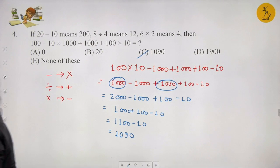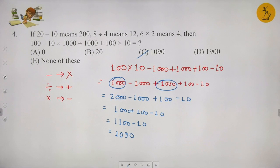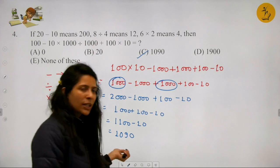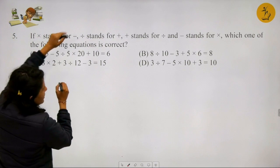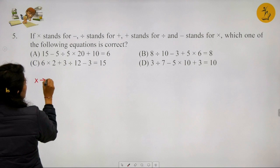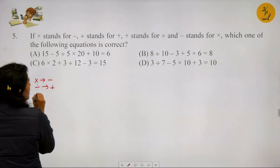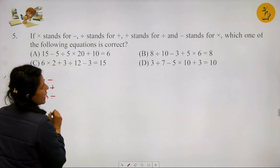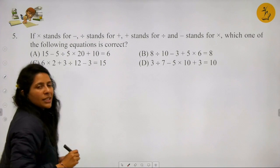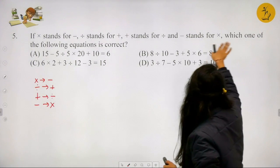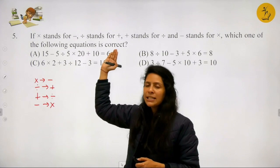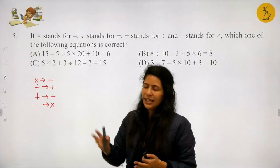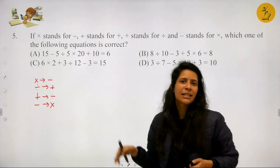Question 5: If multiply means subtraction, division means addition, addition means division, and subtraction means multiplication - which of the following equations is correct? I need to apply these conversions into each option and check if the LHS equals the RHS. Let's start with Option A: 15 minus 5 divide 5 multiply 20 plus 10.